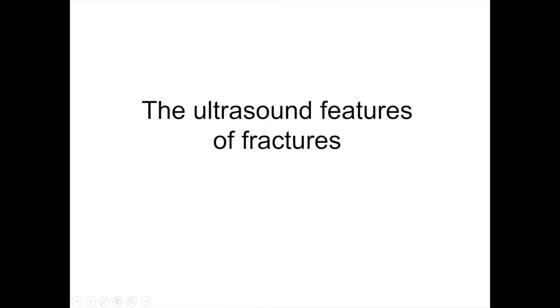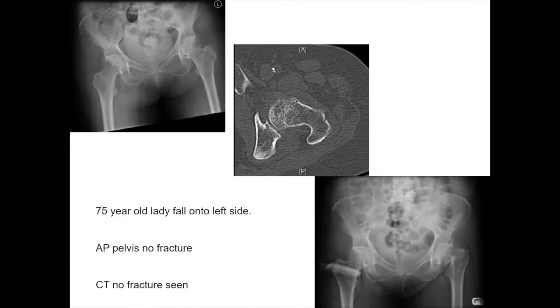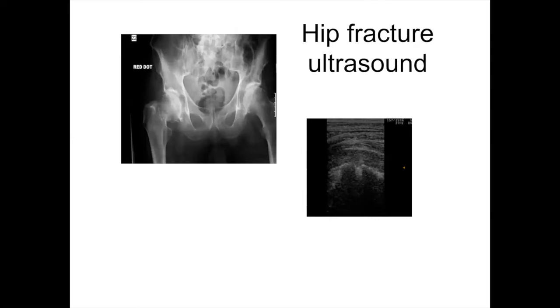So let's talk about the ultrasound features of fractures. We talked about cortical disruption and we talked about fluid. Let's talk about the hip fracture — it's an intra-articular fracture.